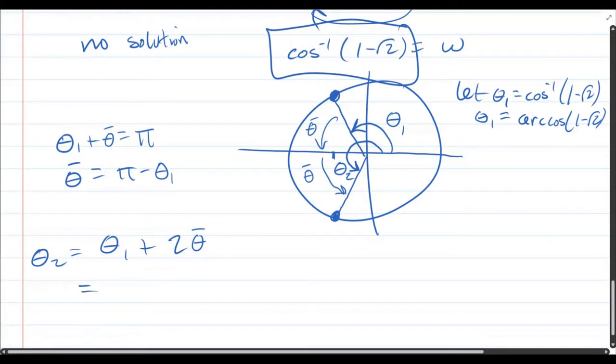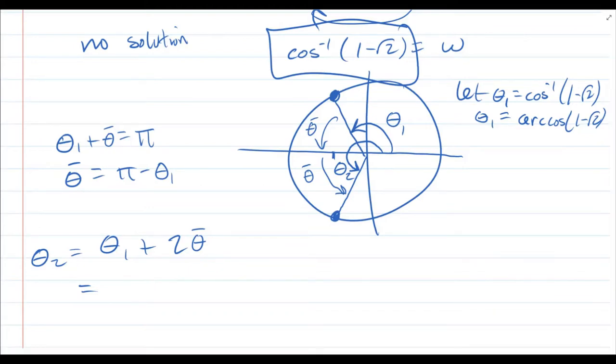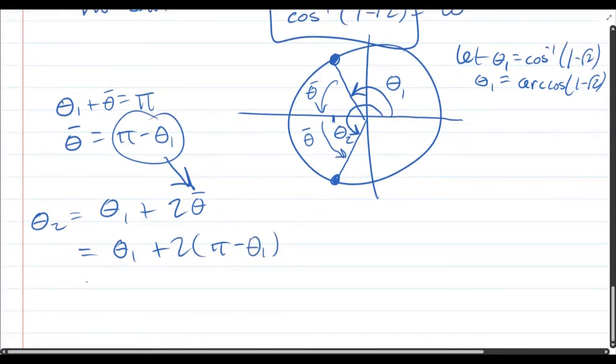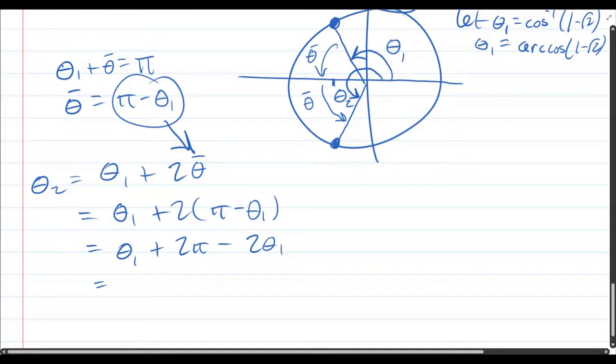And remember, I'd said theta two. Theta two is theta one plus two of these reference angle theta bars. Let's go ahead and plug all these in. Theta one is cos inverse. Before we write down exactly what theta one is, let's make that substitution for theta bar. Distribute your two. Theta one plus two pi minus two theta one. Now we have one theta one minus two theta ones. So it's two pi minus theta one. And that would be two pi. Now I'm going to substitute in what theta one is. So that right there we'll bring down minus arc cos one minus square root two. That'll be theta two.